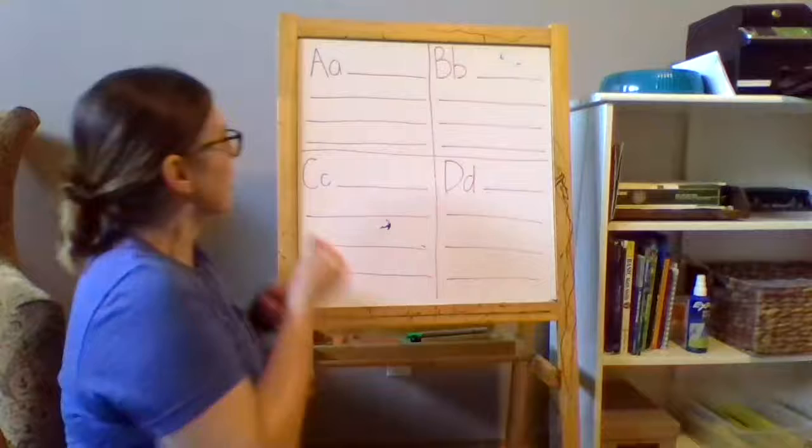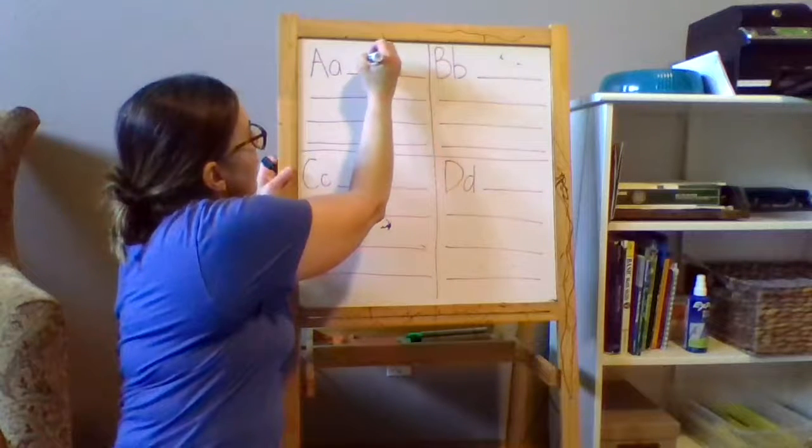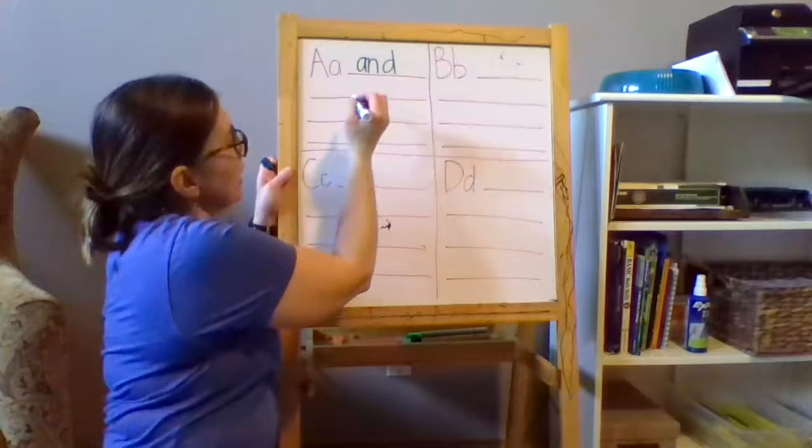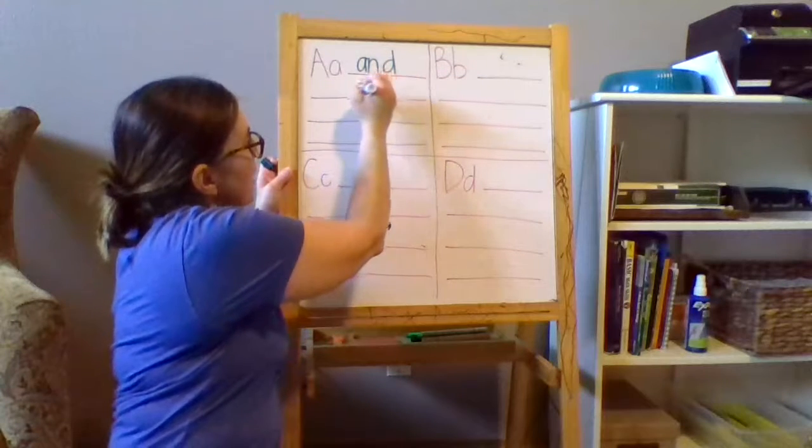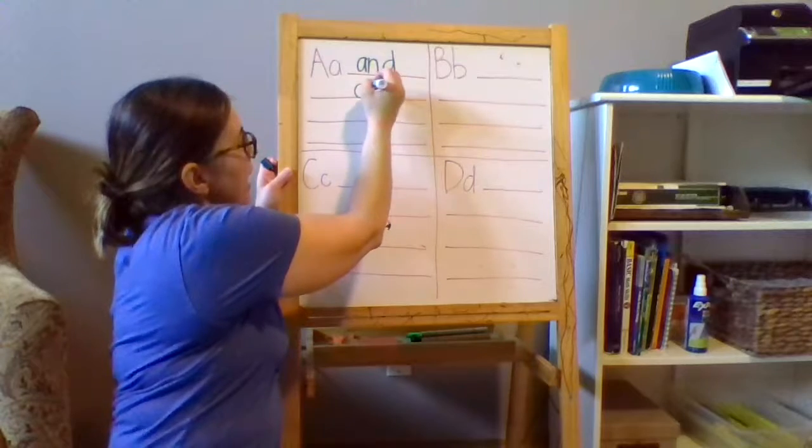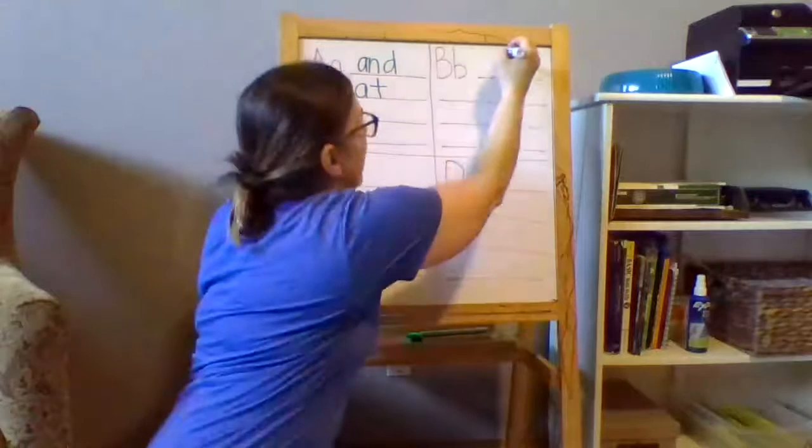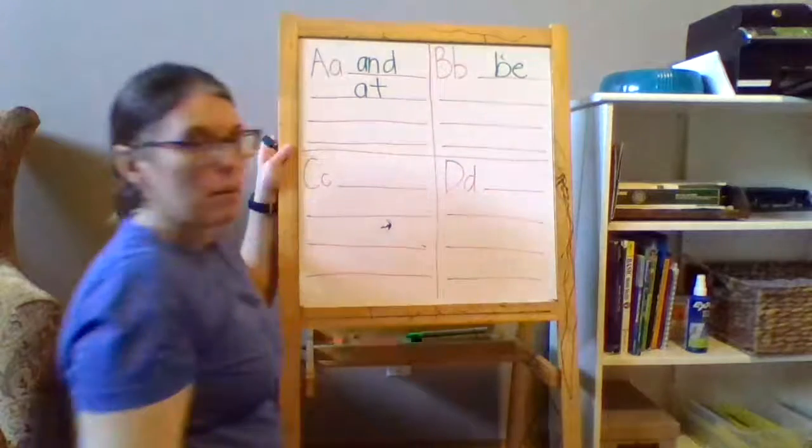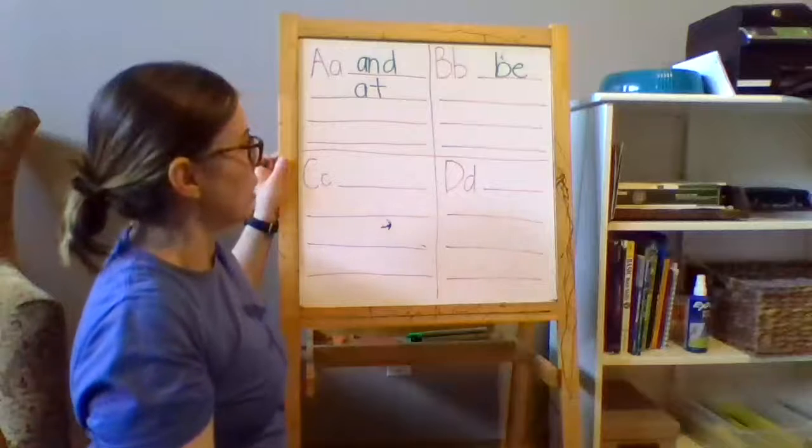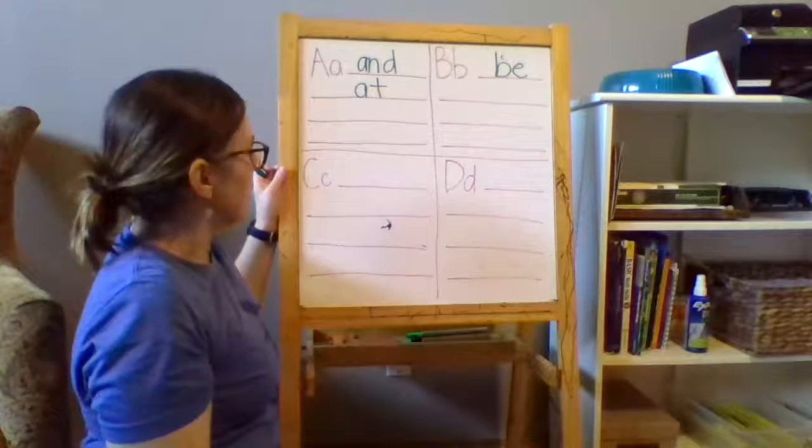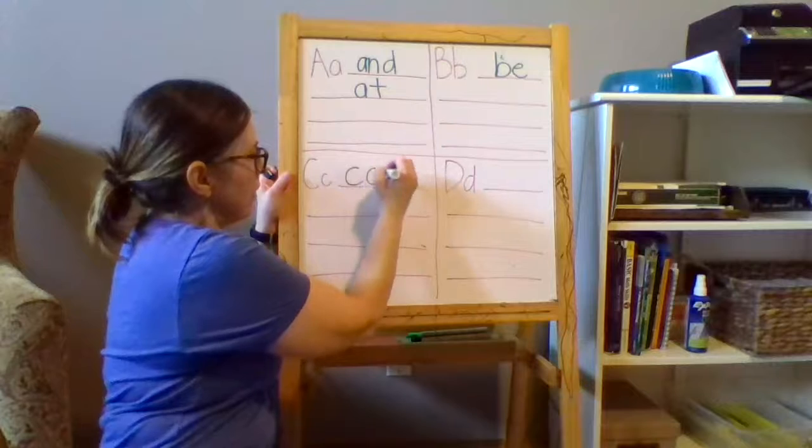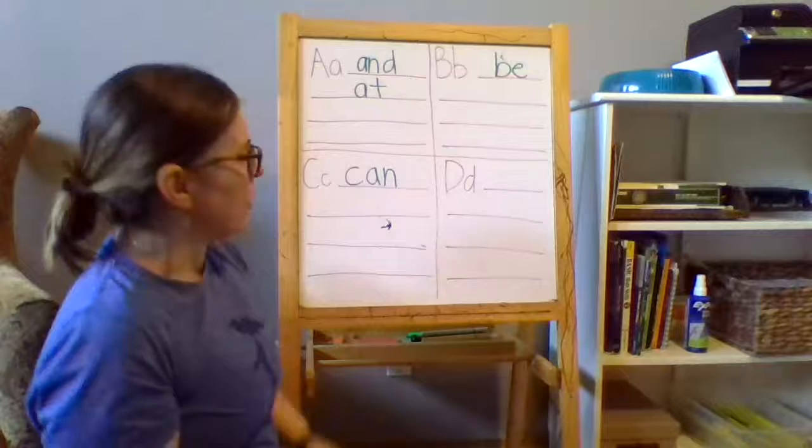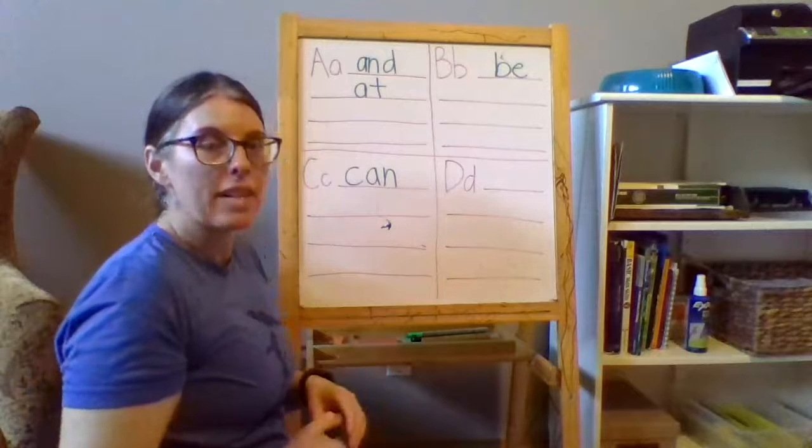So here's what it might look like. If I practiced the word and, I would add and to my word wall. If I practiced the word at, I would add at. If I practiced be, the word be I mean, like I want to be a magician, that kind of be, put that there. Can. Maybe I practiced can.